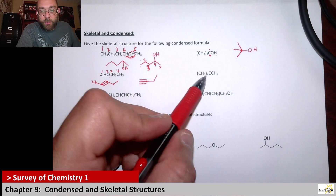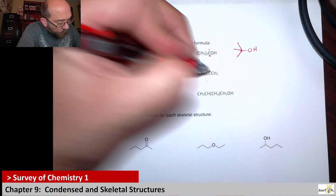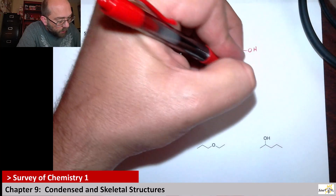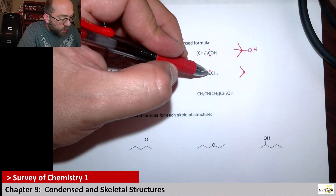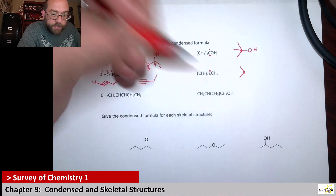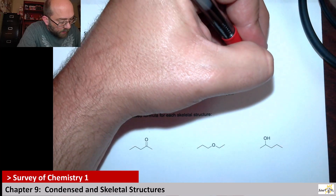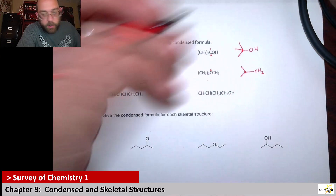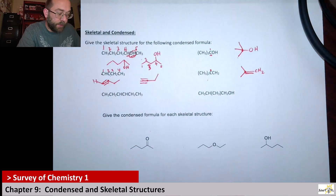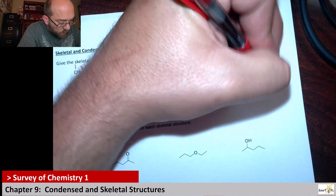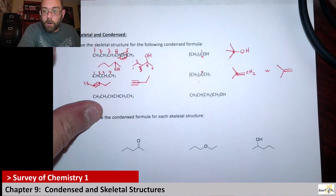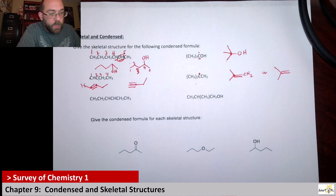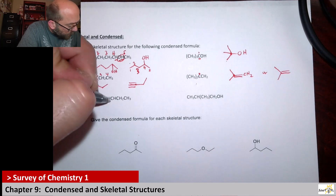Next, we have CH3 twice — so this carbon has two methyl groups coming off it, one and two. It shows no hydrogens bound to it, and then there's a CH2. This central carbon only has three bonds and the CH2 carbon only has three bonds, so there must be a double bond between these two. The skeletal structure would show that double bond without the CH2 label.